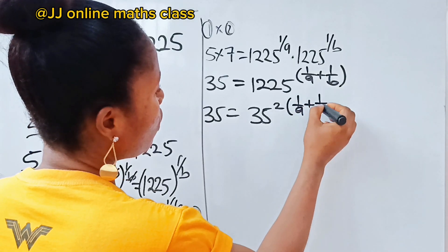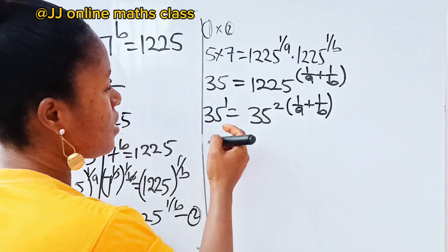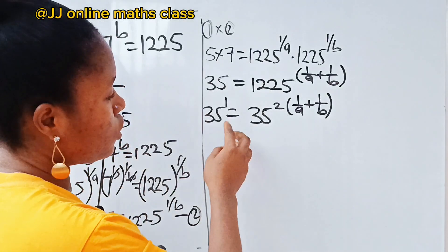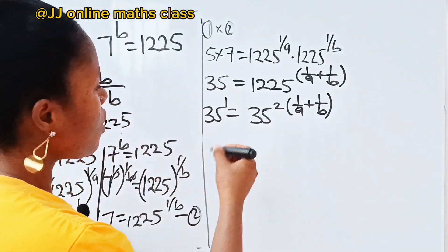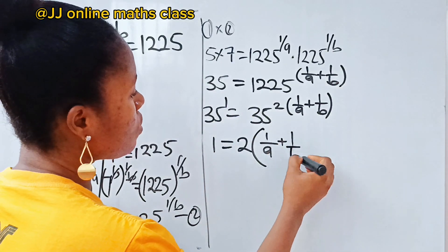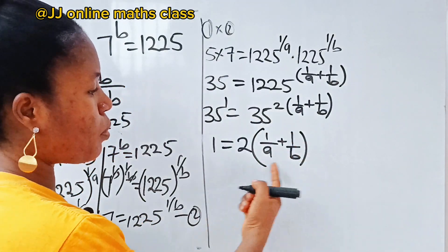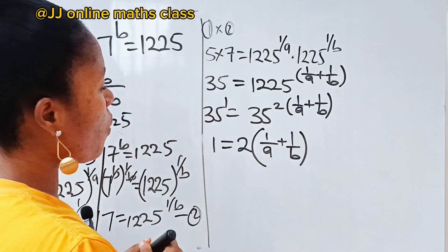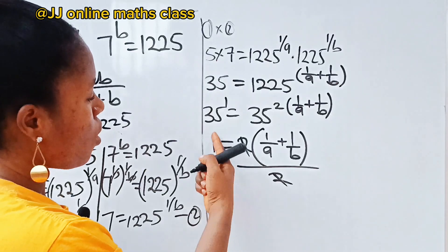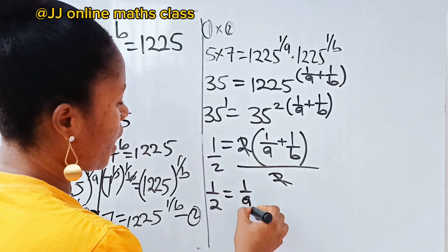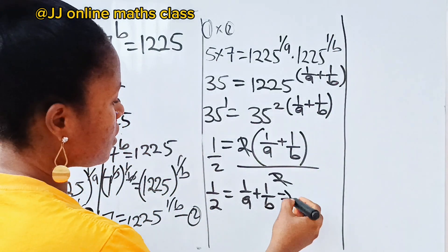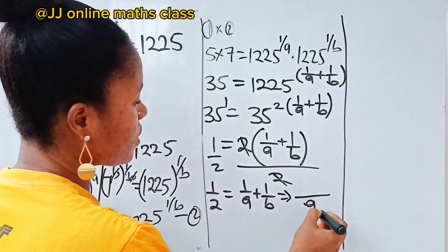So we have 35 squared raised to the power of one over a plus one over b equals 35 to the power of one. Once you have the same base in indices, the powers are equal. So one is equal to two times the bracket one over a plus one over b. Dividing both sides by two gives one over two equals one over a plus one over b.